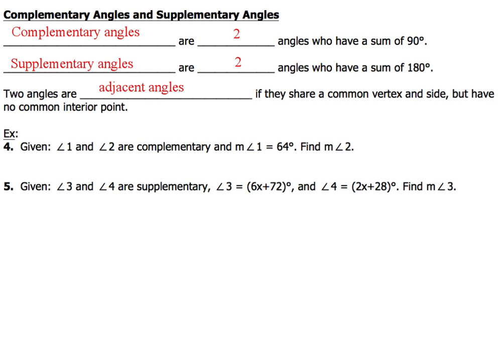Given angle 1 and angle 2 are complementary and the measure of angle 1 equals 64 degrees, find the measure of angle 2. This is going to be a very straightforward equation that we'll write.